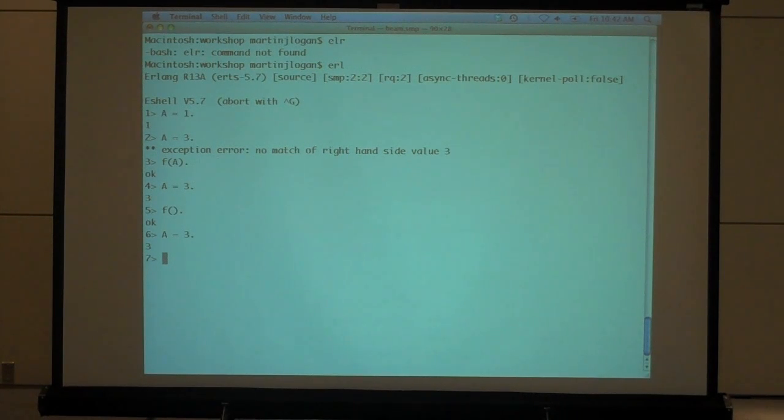So the pattern matching. Couple of A, comma A, comma B equals 1, comma 1, comma 1, comma 2. And see what happened there? Let's try it like this. 3, 3, comma 2.